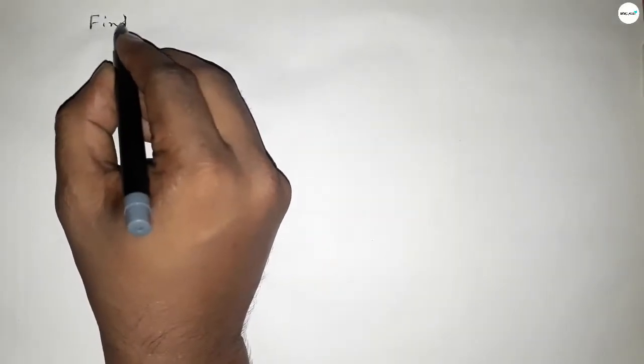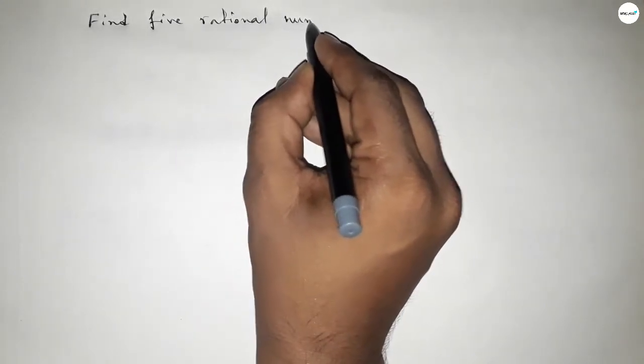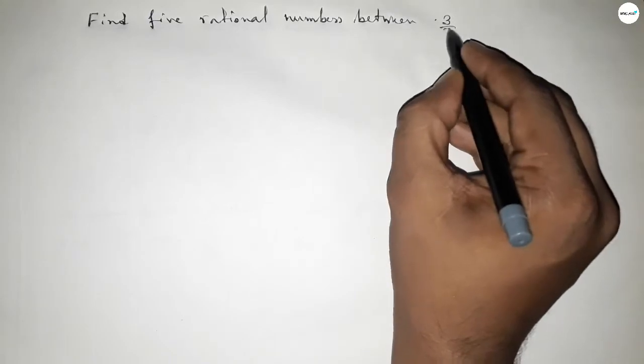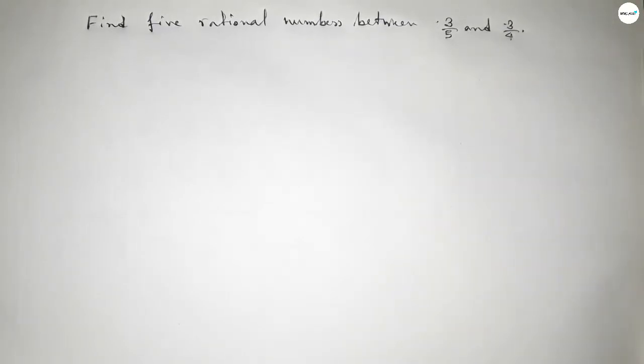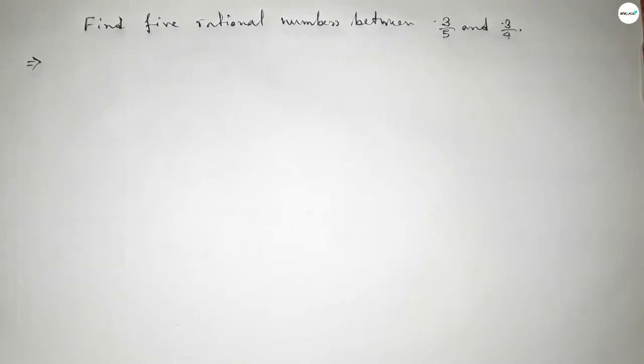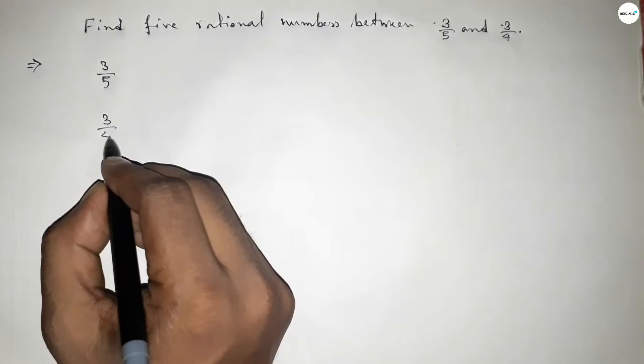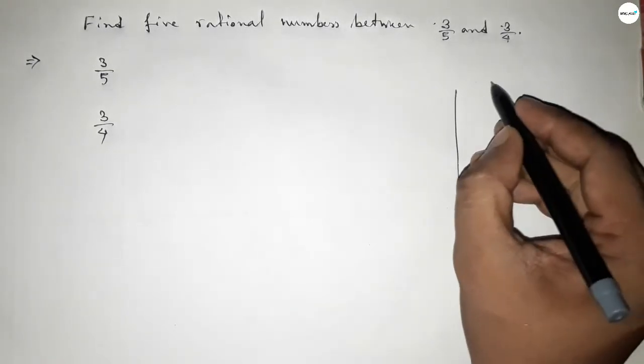Hi everyone, welcome to SH Chair Classes. Today in this video we have to find 5 rational numbers between 3 over 5 and 3 over 4. So let's start the video. First of all, write down here the given numbers: 3 over 5 and 3 over 4.